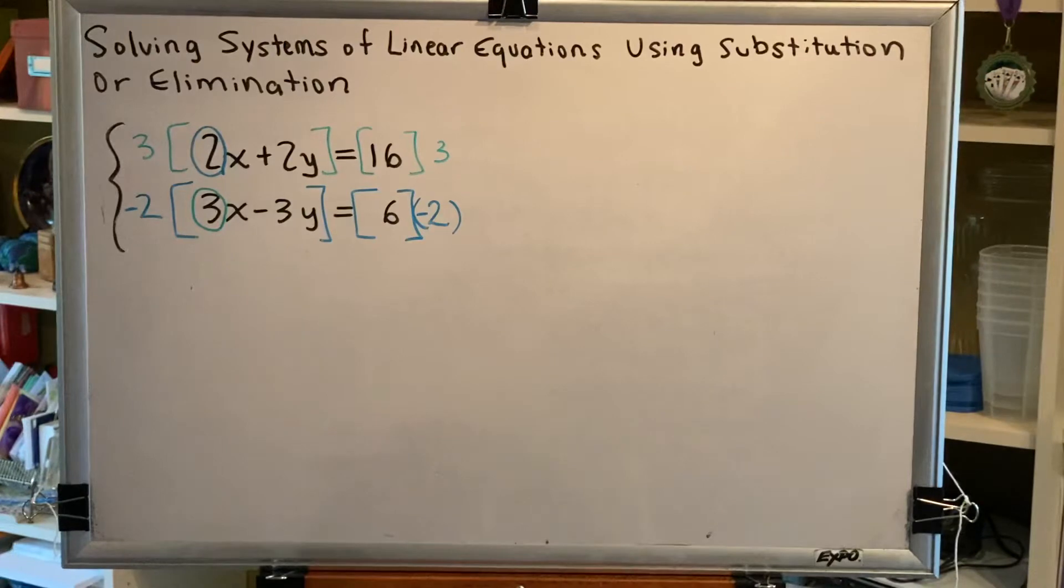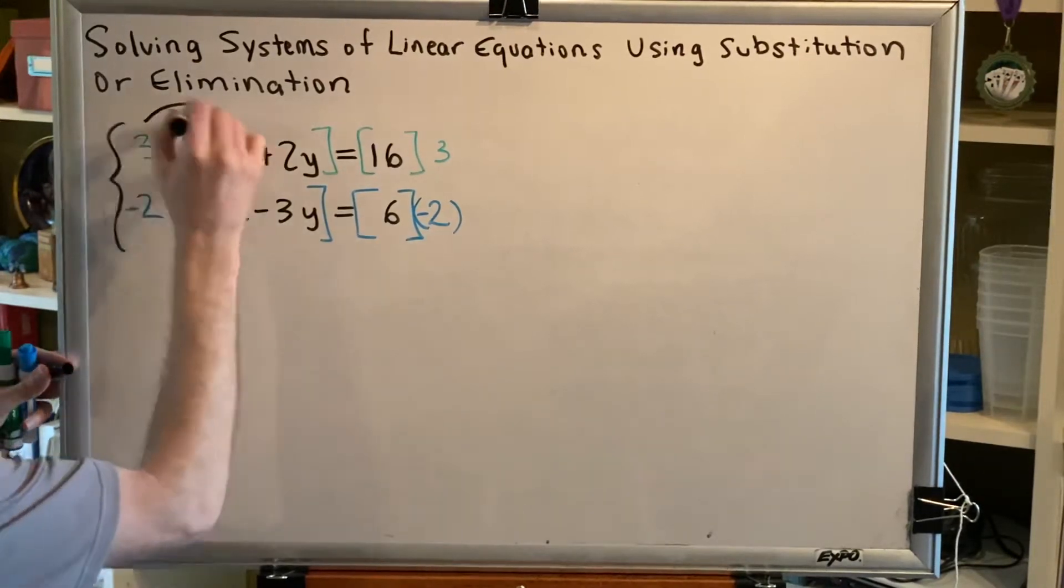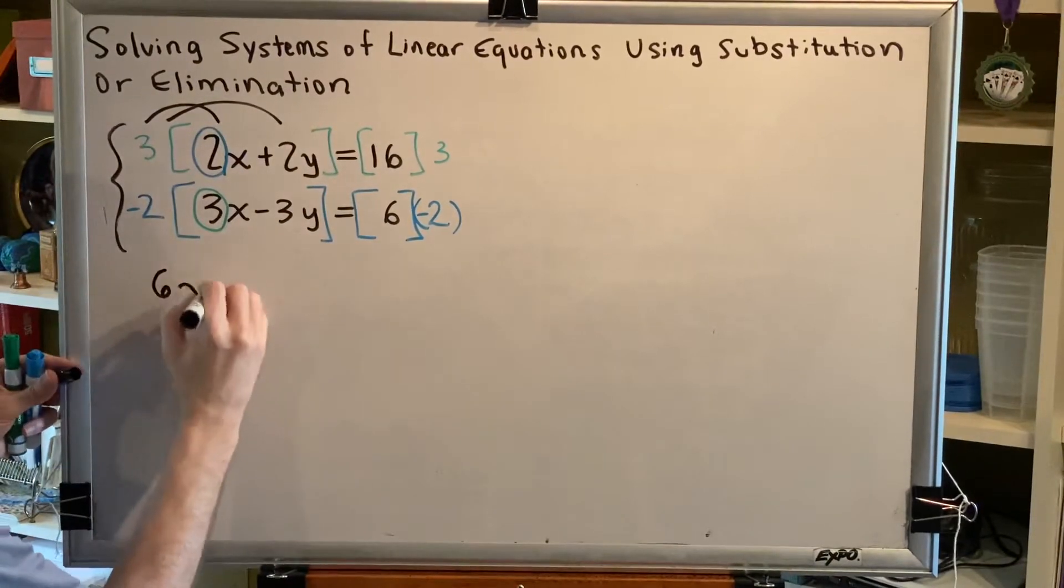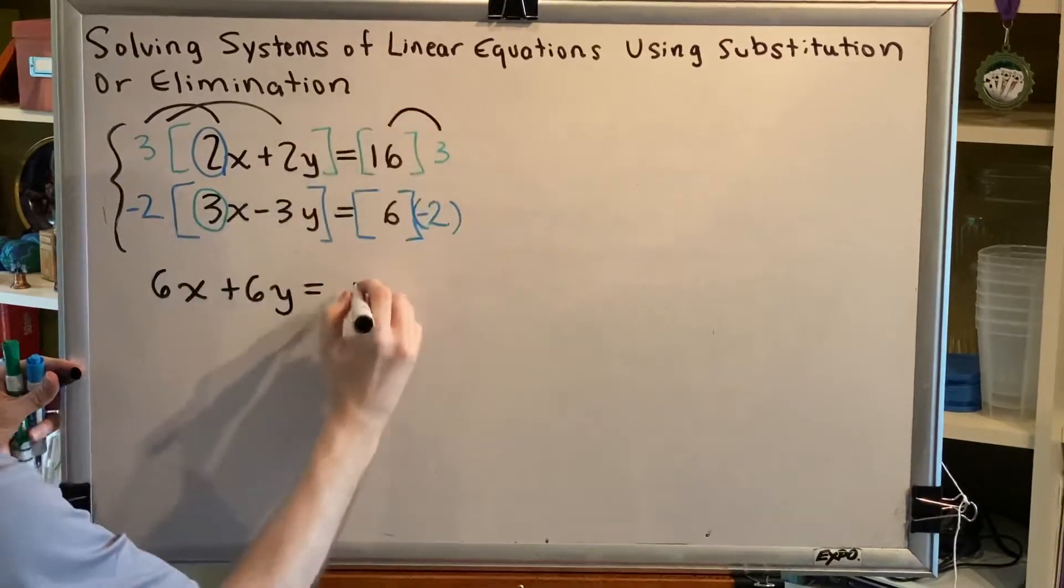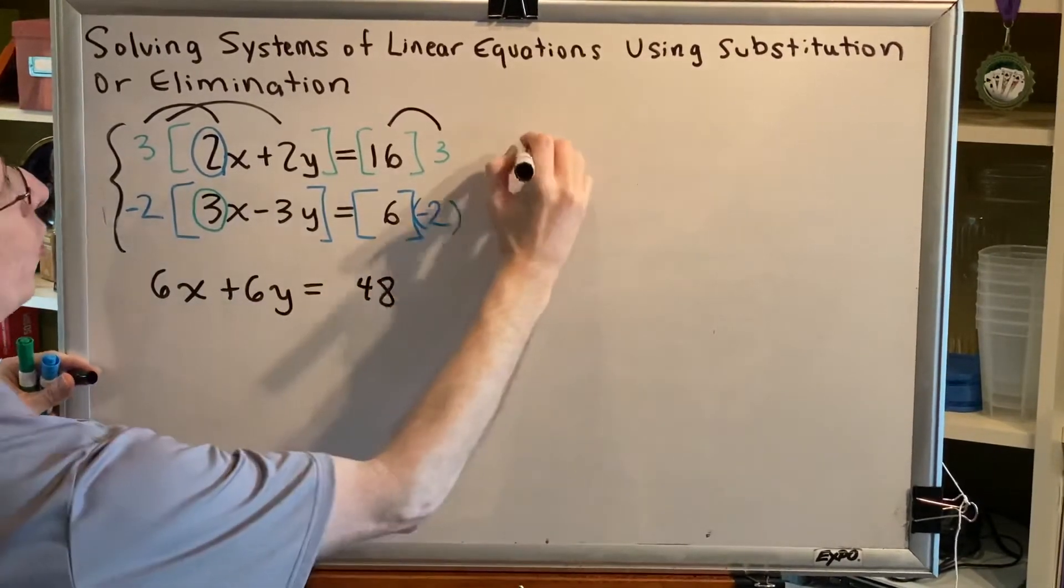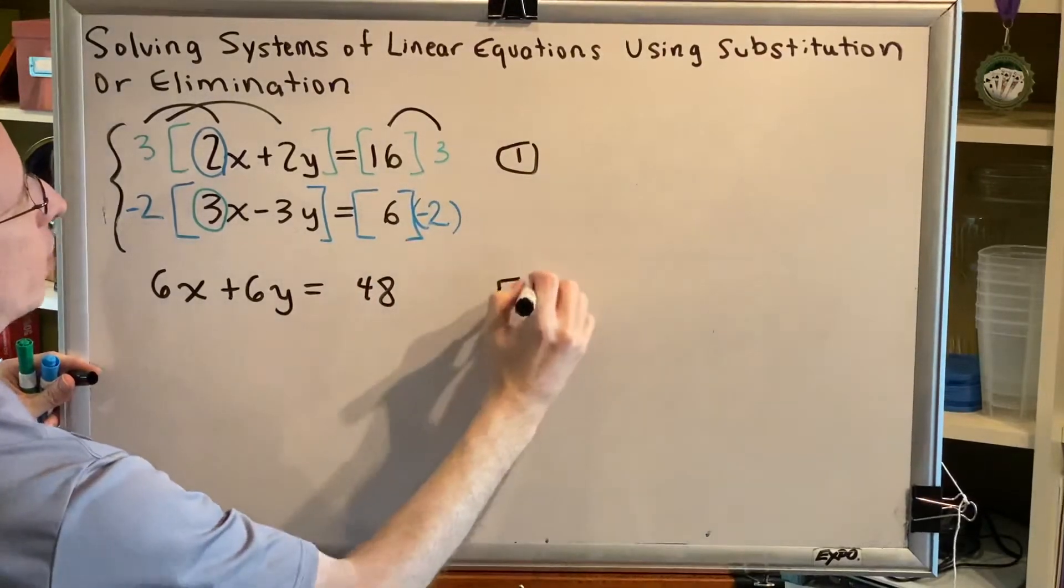Okay, now we're going to do our multiplication. So we'll distribute here, and we will get 6x plus 6y equals, we'll multiply here and get 48. We have now rewritten equation 1.